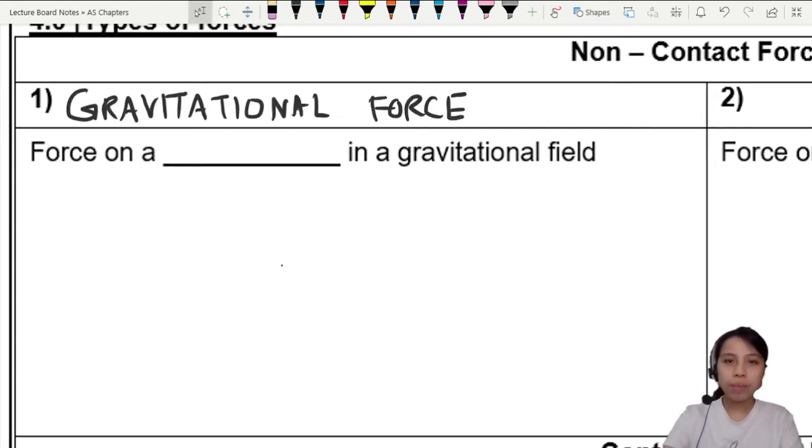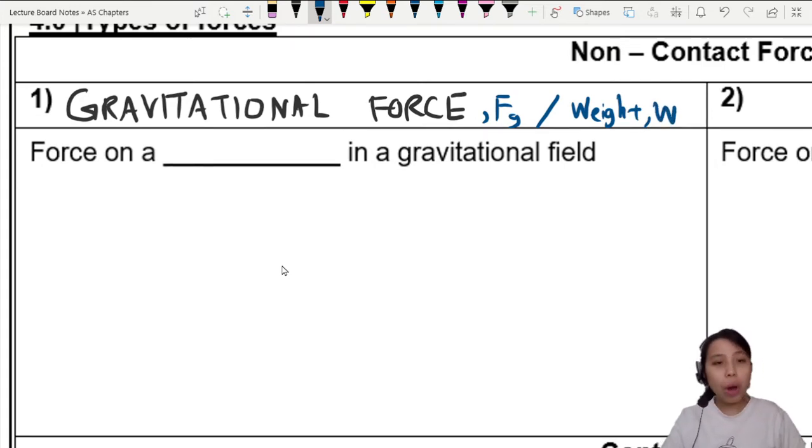The first one is our good friend called gravitational force. We use a symbol FG or sometimes affectionately known as weight W, whichever one you use is fine. So this force acts on a mass in the gravitational field.